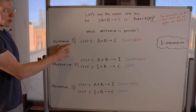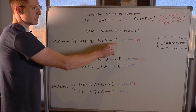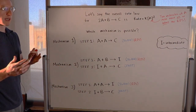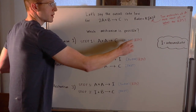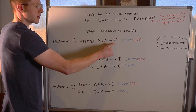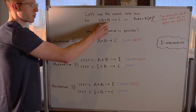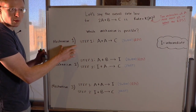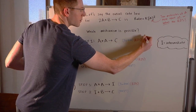In mechanism one, there is only one step: two molecules of A react to make C. This is the slow step and therefore also the rate determining step. So we do satisfy the requirement that two molecules of A are reacting at the rate determining step, and they do make C, our product. But B is nowhere to be found, and we know B is one of the reactants. B must be present in the mechanism for it to be a possible mechanism. Therefore, mechanism one is not possible.